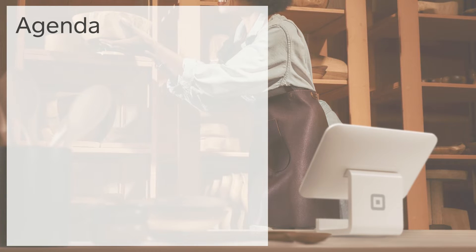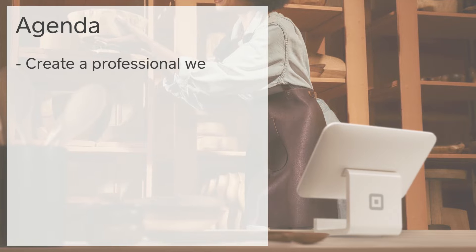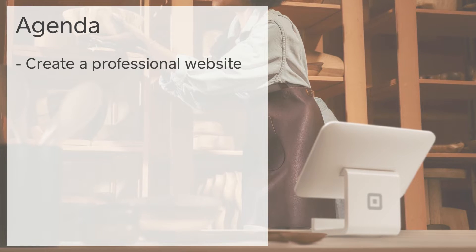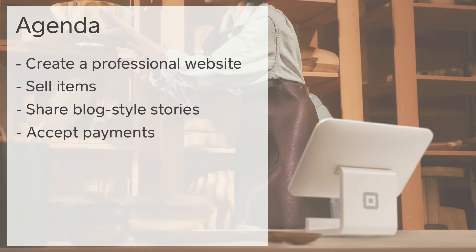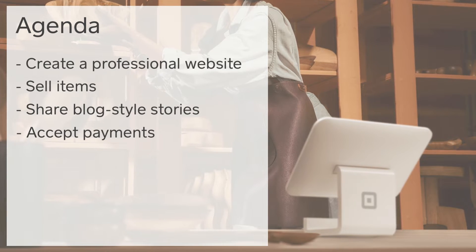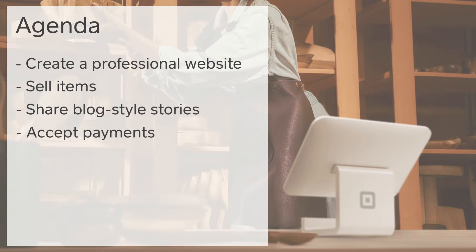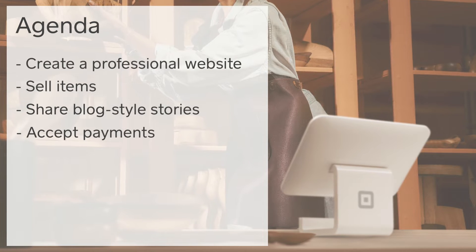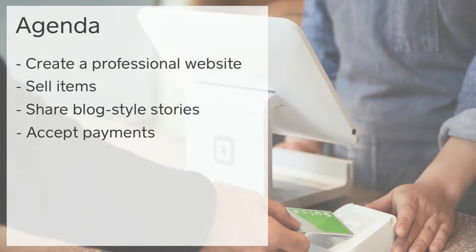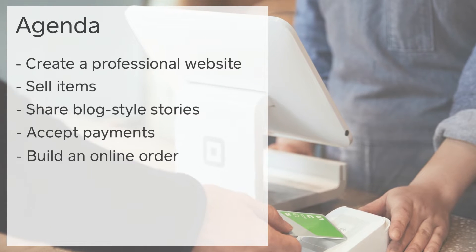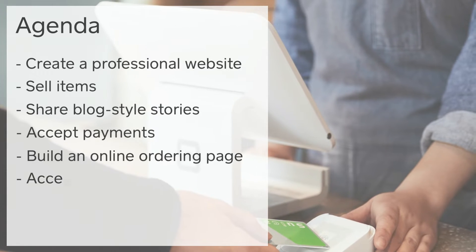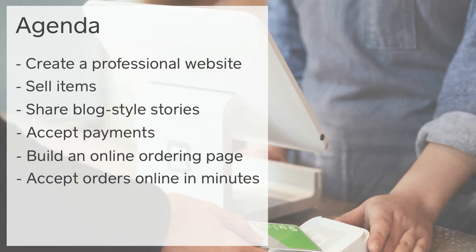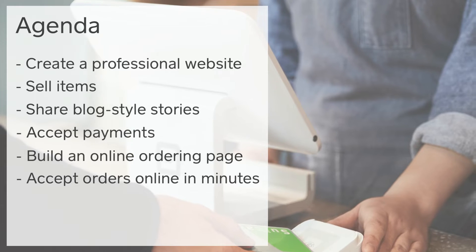Square Online is a robust platform where you can create a professional website to showcase your business online, sell your items, share blog style stories, and accept payments with Square. With our easy to use website builder, spend less time setting up Square Online and more time focusing on what matters most — your business. Today I'm going to show you how you can create an online ordering page for your business with a free version of Square Online. Follow along with me and you can start taking orders online from customers in minutes. Let's get started.